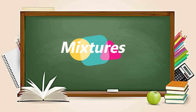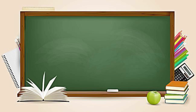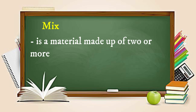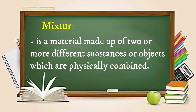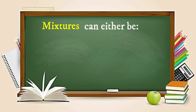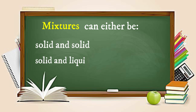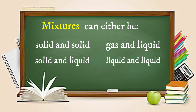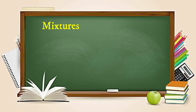When you combine pure substances, you'll get a mixture. What do we mean by mixture? Let's elaborate. A mixture is a material made up of two or more different substances or objects which are physically combined. This can either be a combination of solid and another solid, solid and liquid, gas and liquid, liquid with another liquid, and gas with another gas.